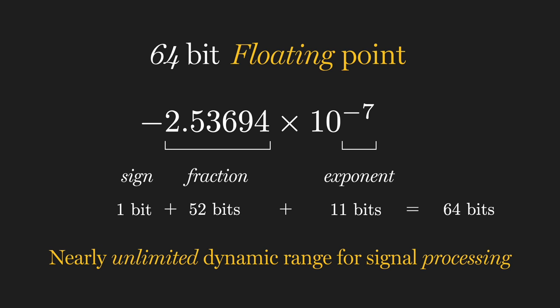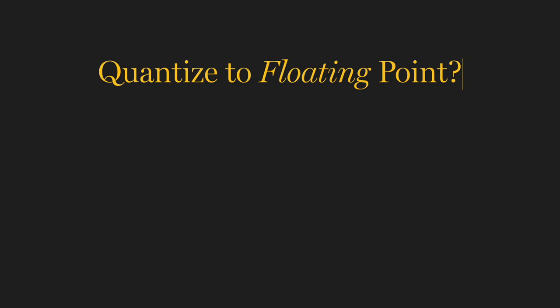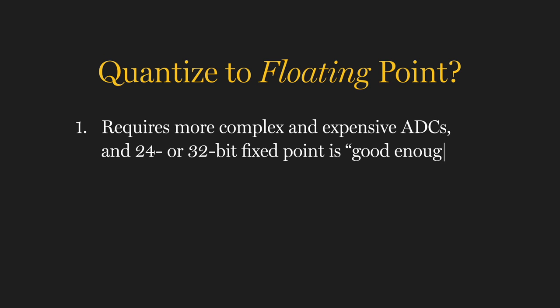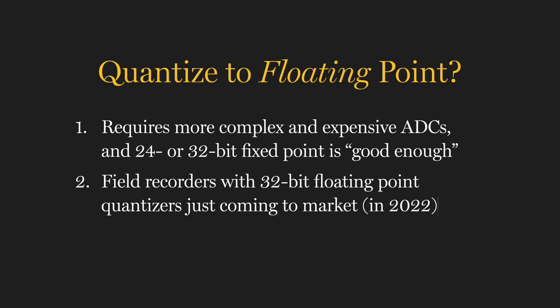So why not just quantize to 32-bit or even 64-bit floating-point for audio recording? Well, this requires much more complex and expensive ADCs. And for most applications, recording in 24- or 32-bit fixed-point has been good enough. As I'm recording this in 2022, 32-bit floating-point quantizers are just coming to market in some professional field recording devices. With properly designed hardware, this can be ideal for live recording situations where the incoming dynamic range is unpredictable. As these become more widely used, we'll likely see floating-point quantizers become cheaper and perhaps as common as the fixed-point digitizers we currently use.